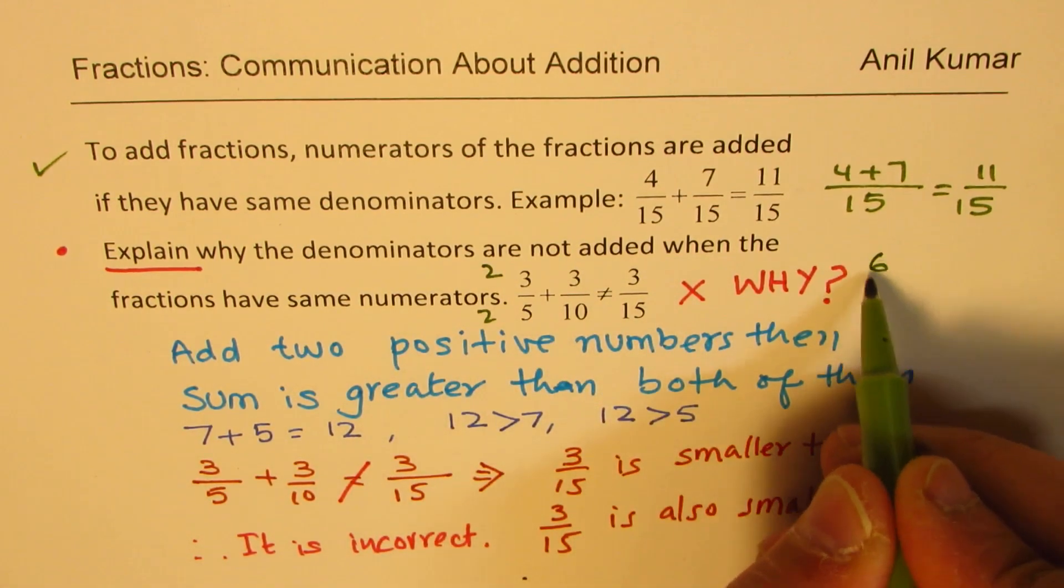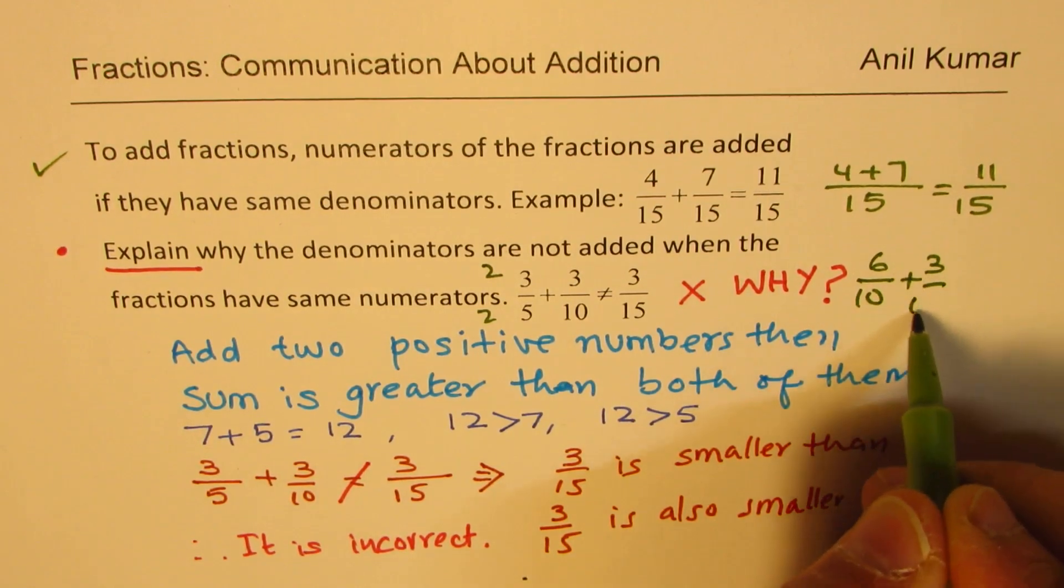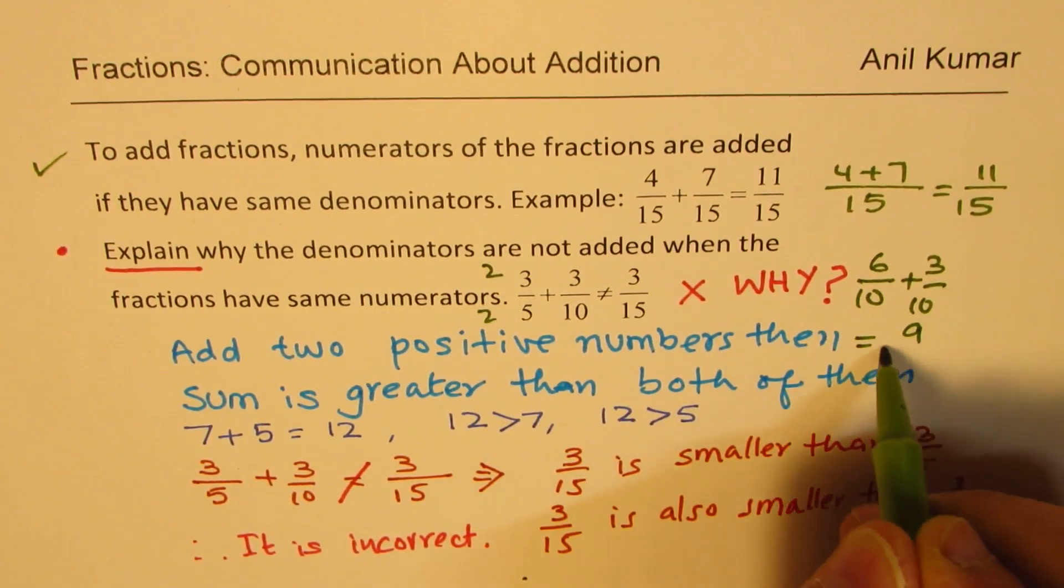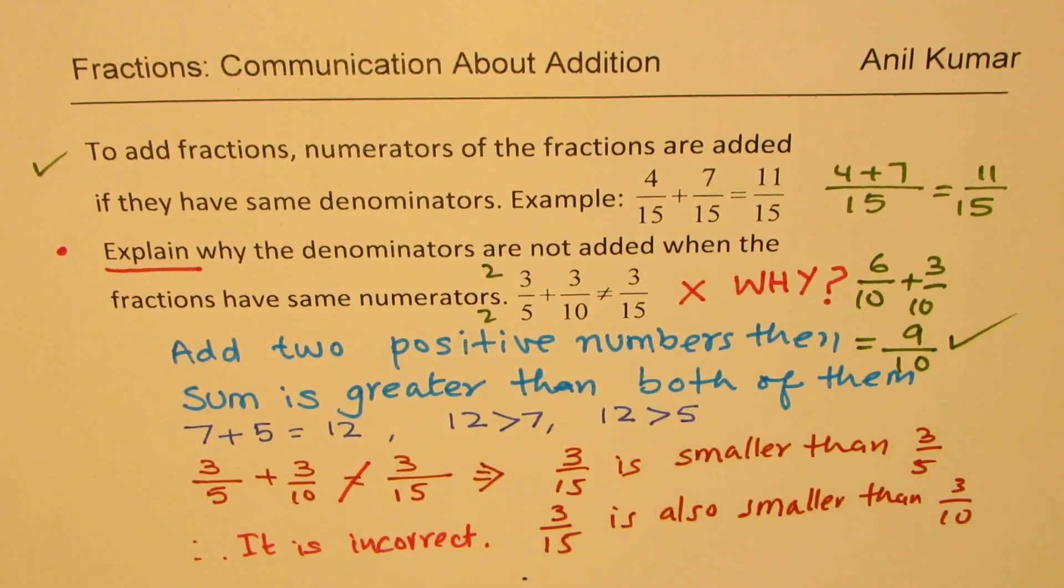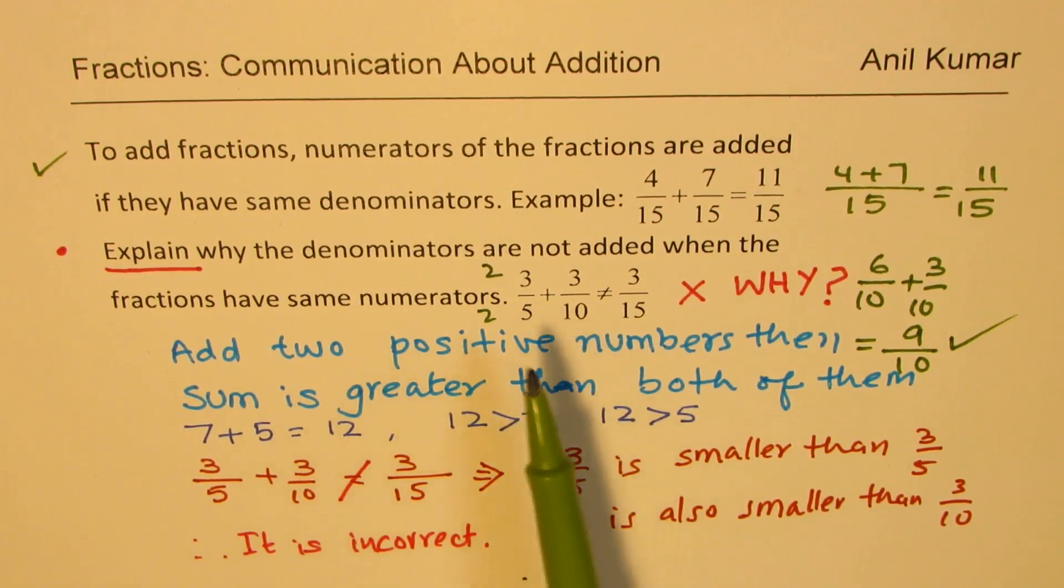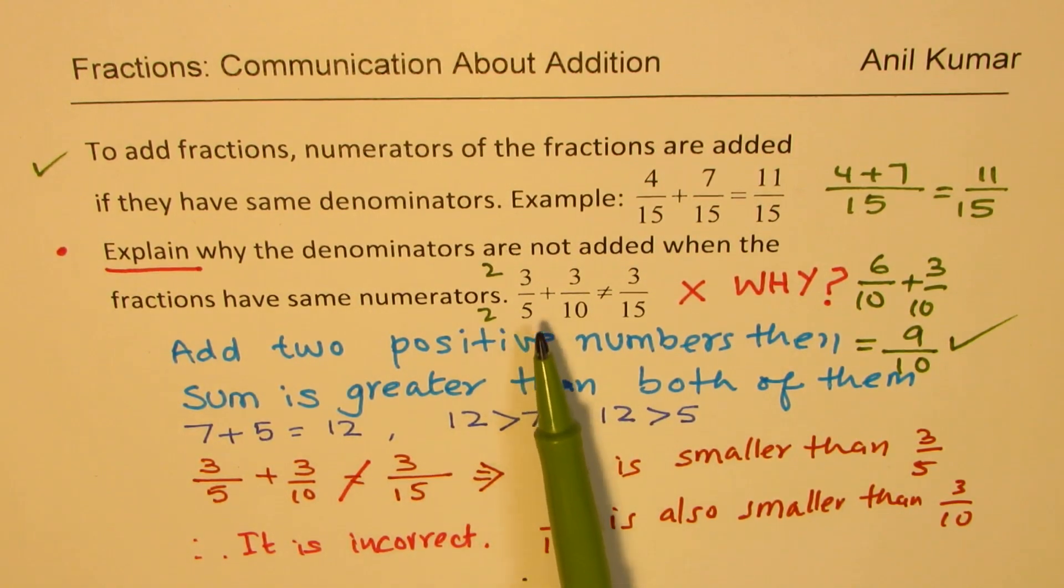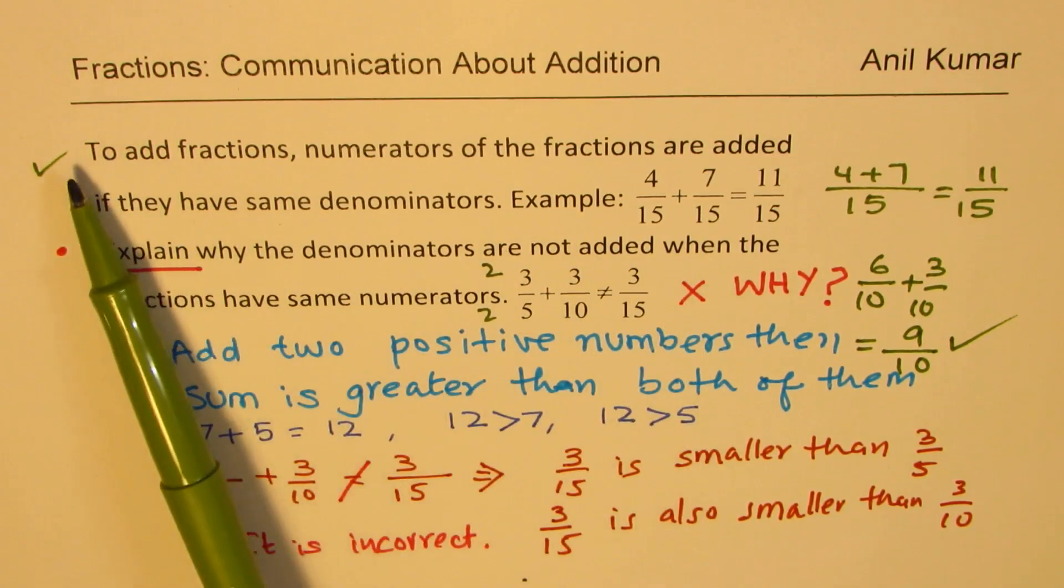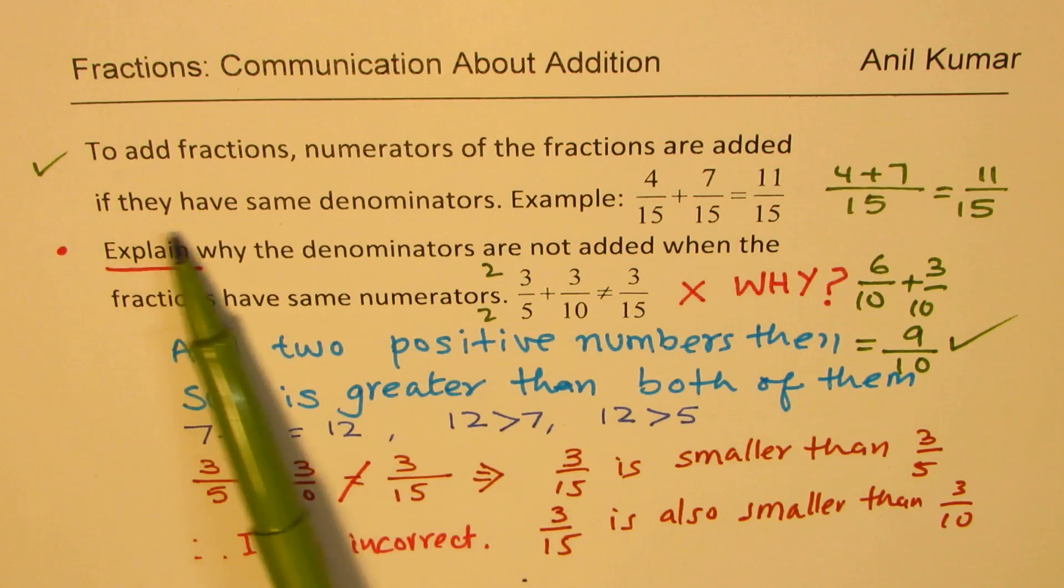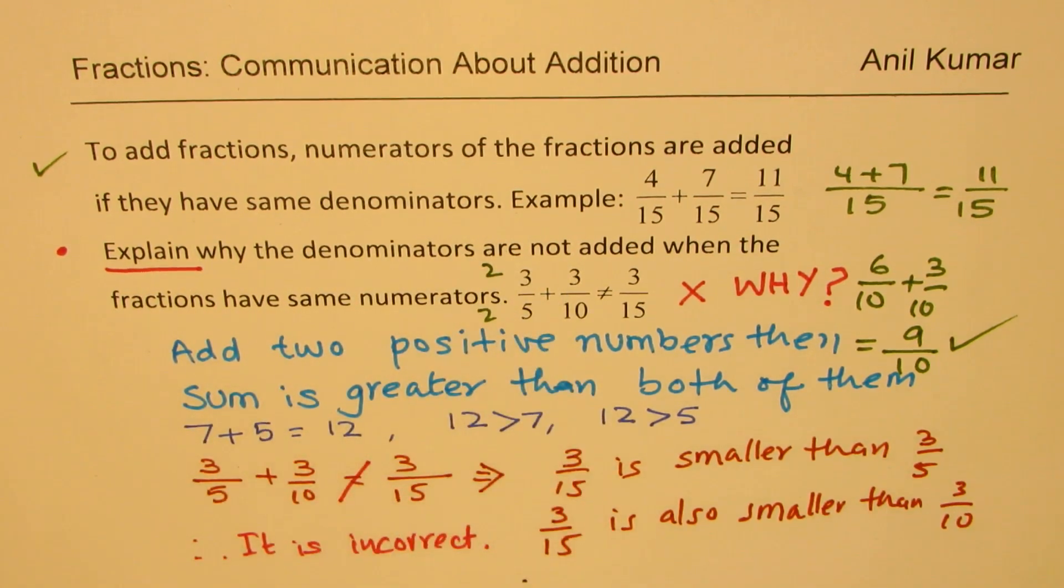So we'll get 6 over 10 plus 3 over 10, and we'll add it to get 9 over 10. So that will be the correct answer. So the steps in adding always will be to make common denominator, then add numerator, which is this statement given here. So that is how we add. So we'll take up many examples in our series and understand how to efficiently add fractions with different denominators and will also work with mixed numbers.